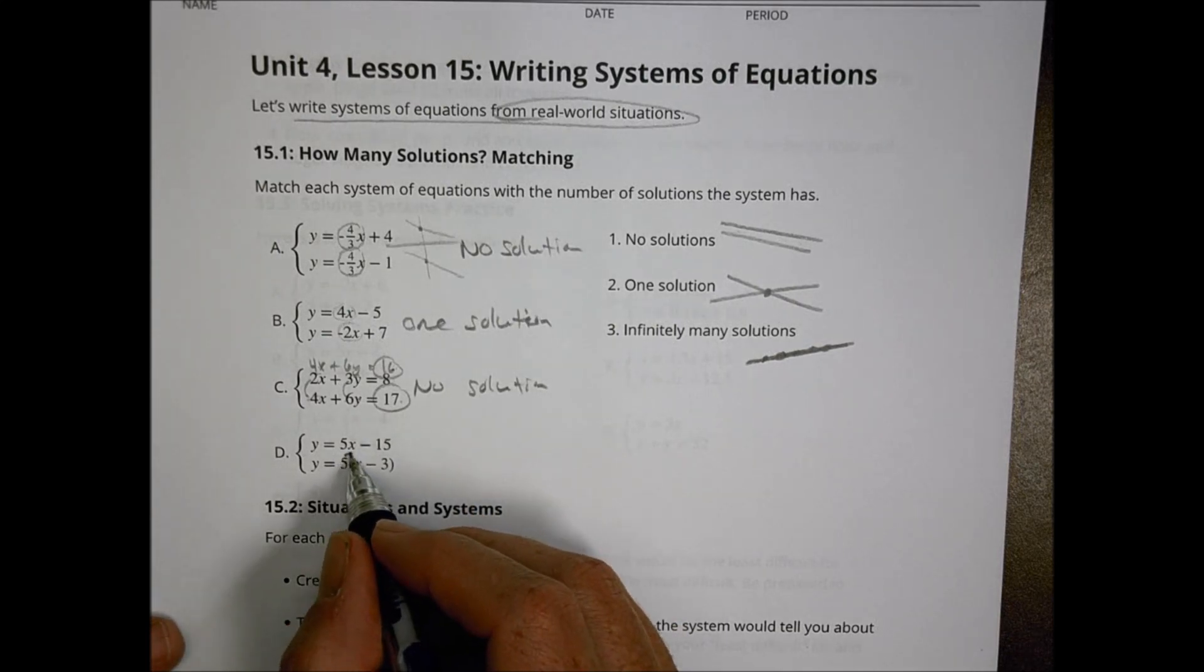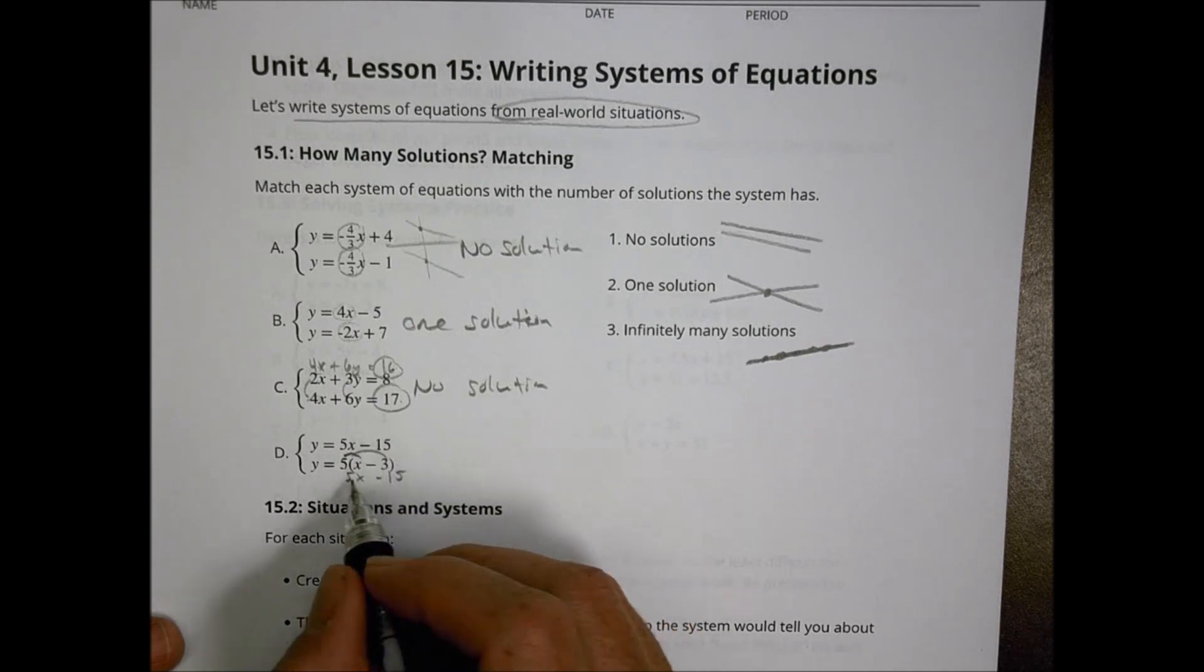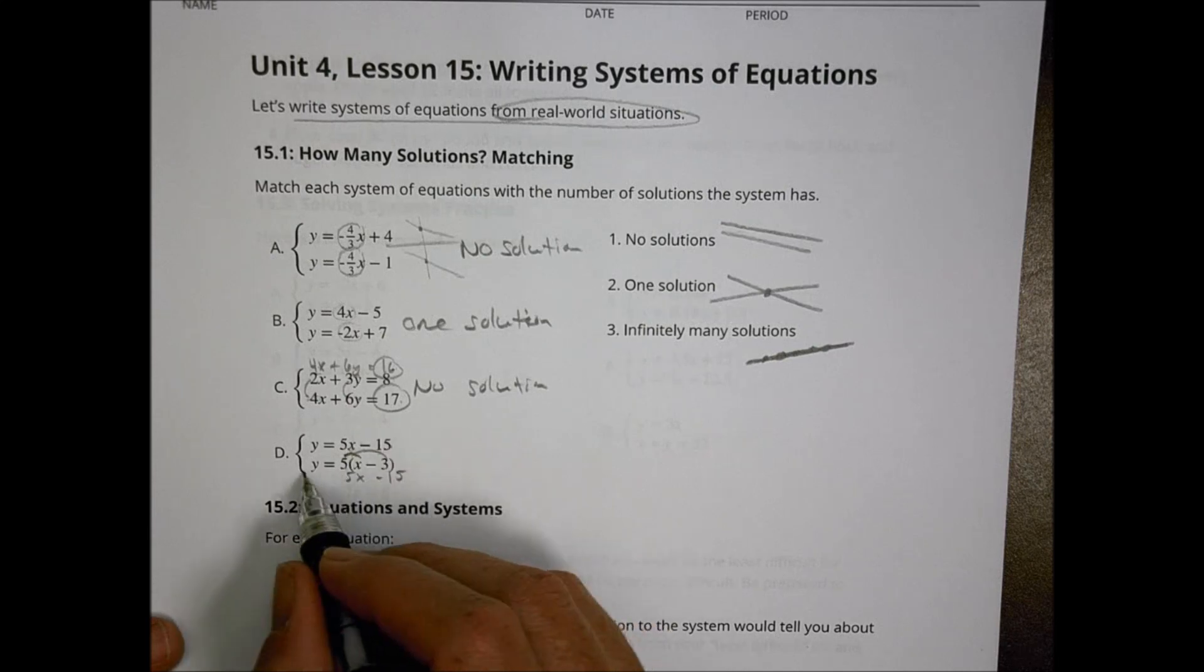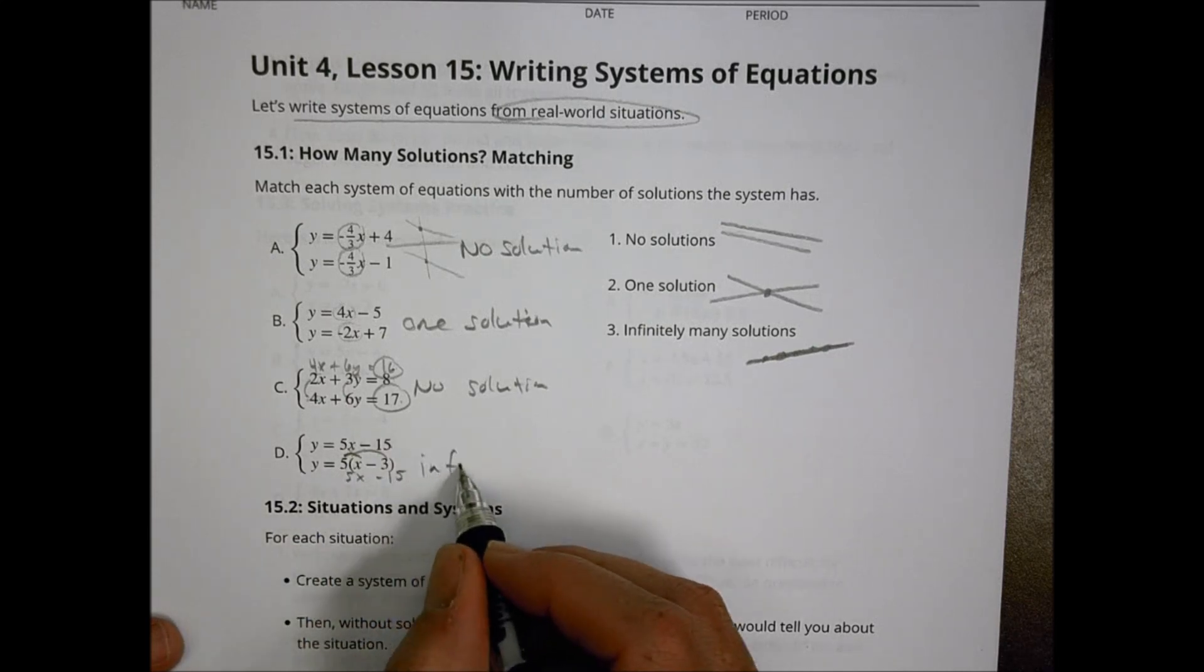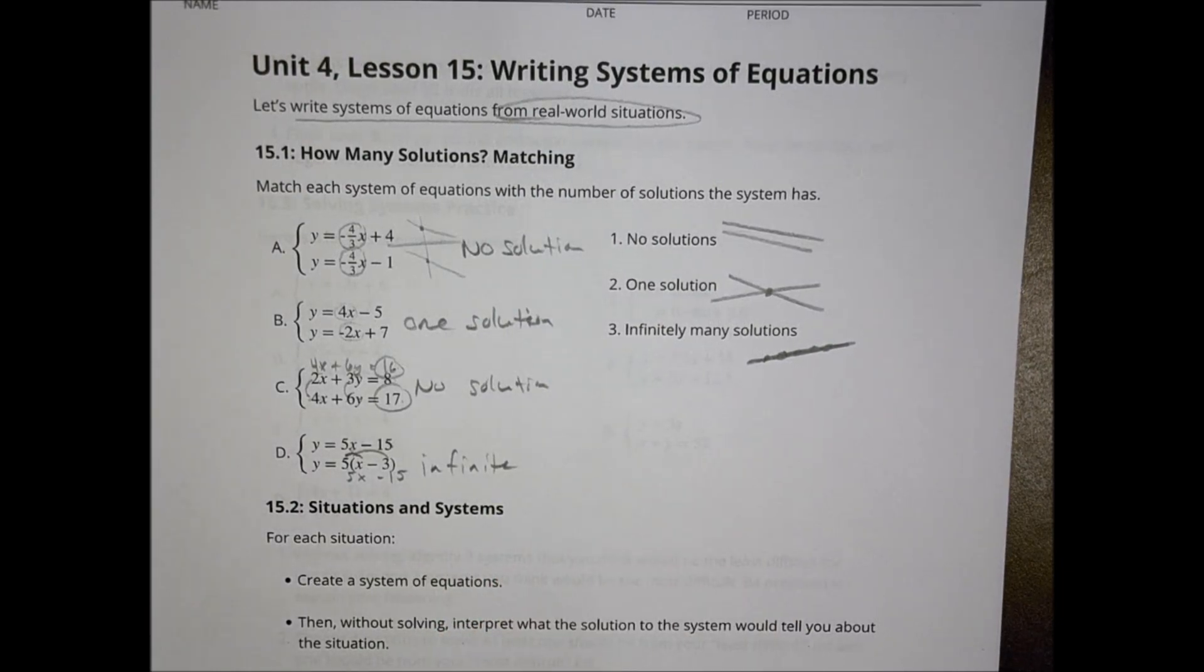And finally here, if we distribute, we have 5x minus 15. And so because we have the same equation, y equals 5x minus 15, this is going to be an infinite number of solutions on that one there because it's the same equation.